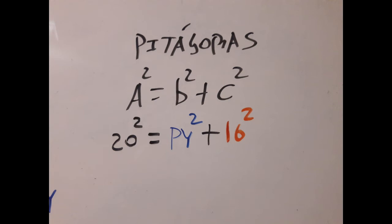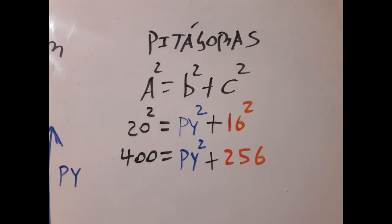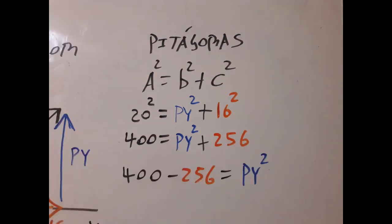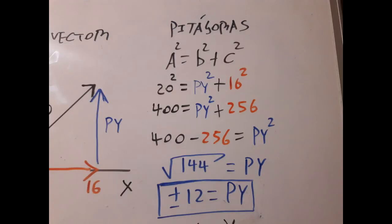So we apply the theorem and do some algebra. We get that py, the y-component, is the square root of 144. This is plus or minus 12 meters.